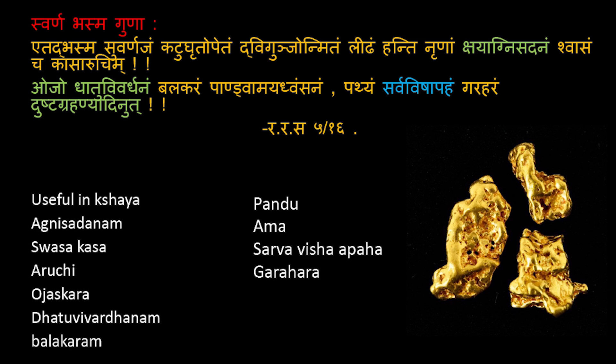Agni Sadhanam: for any person with disturbed Jhatar Agni, Dhatu Agni, or Bhut Agni — any Agni that is hampered — you are supposed to give Suta Shekhar Rasa. This Phalashruti as claimed by Rasaratna Samuchaya indicates impact on Sarva Daihika — not only on the GIT, not only as anti-acid property, but having a wide spectrum of clinical utility. He also explains Ojo Dhatu Vivardhanam, which is going to increase the Ojas of an individual, increase inner power, and improve overall healthiness.